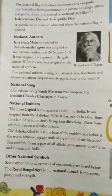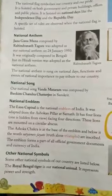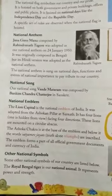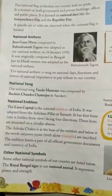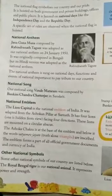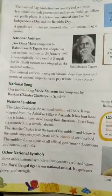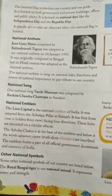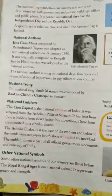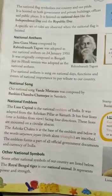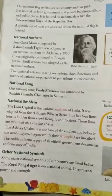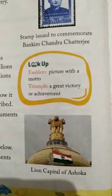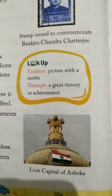Our national emblem is the Lion Capital of India. It was adopted from the Ashoka Pillar at Sarnath. It has four lions in it, and one is hidden from view. These four lions are facing towards the four directions. The lions are mounted on a circular abacus. The Ashoka Chakra is at the base of the national emblem, and below it the words Satyameva Jayate are inscribed. Here we can see only three lions, and one lion is facing back.